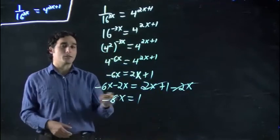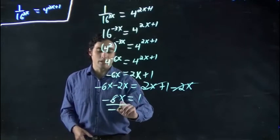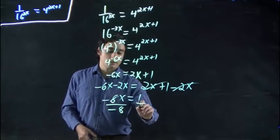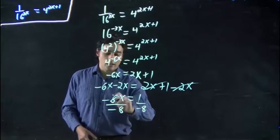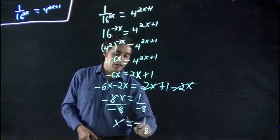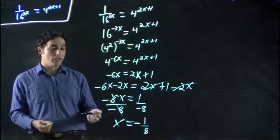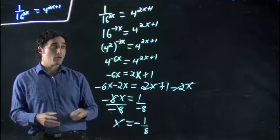Well, if I want the x on its own, I've got to do the opposite of what's being done to it. Right now, I'm multiplying by negative 8. So, I divide by negative 8. Very squeakily. And cancel. So, I get x equals minus 1 over 8. Remember, we're just doing the opposite of what's being done to the x. That way, it becomes all on its own. And we just solved our problem.